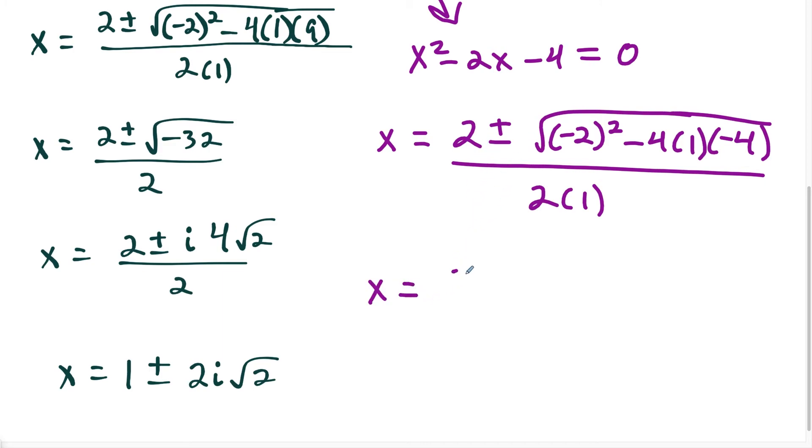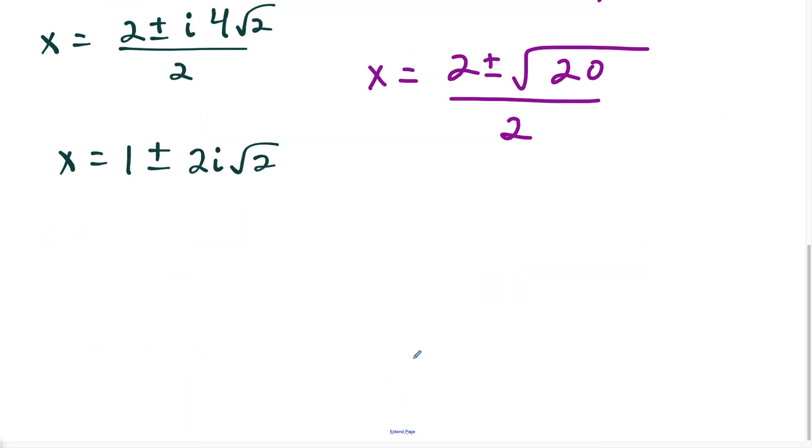So now we just have to simplify things a bit. We have 2 plus or minus, and if we work out the square root, we have 4 plus 16, because we're going to have negative 4 times negative 4, and 4 plus 16 is 20, and we're dividing all of this by 2.